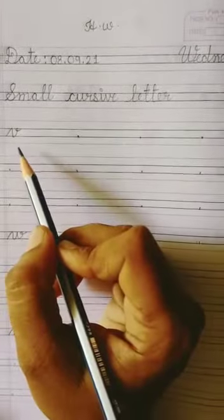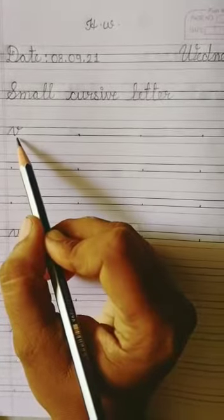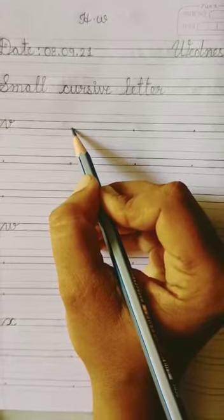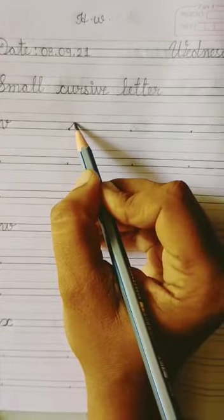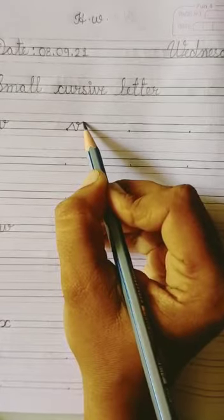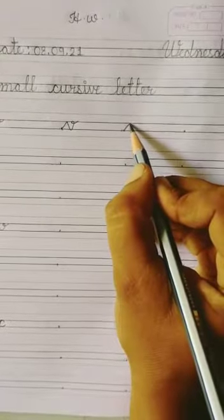So now start writing this letter V. V says V. Put a pencil, go up, make a slant line, come down, go up again and make a loop. This letter V.